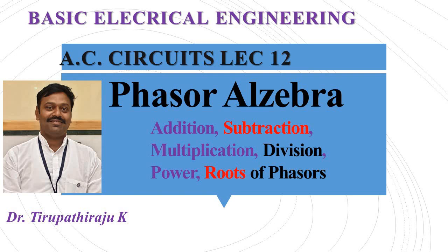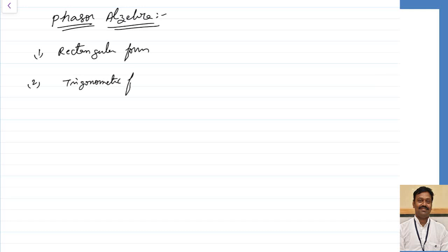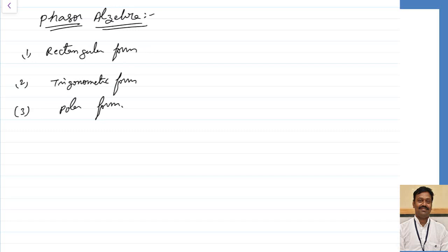Good morning all. Today we are going to discuss phasor algebra and its application to AC circuits. The phasor algebra you studied in plus 2 — any vector can be represented either in the rectangular coordinate system, trigonometric form, or polar form. Let us first see what these forms are, then we will see their applications. Once these basics are clear, the next class will discuss application to AC circuits.